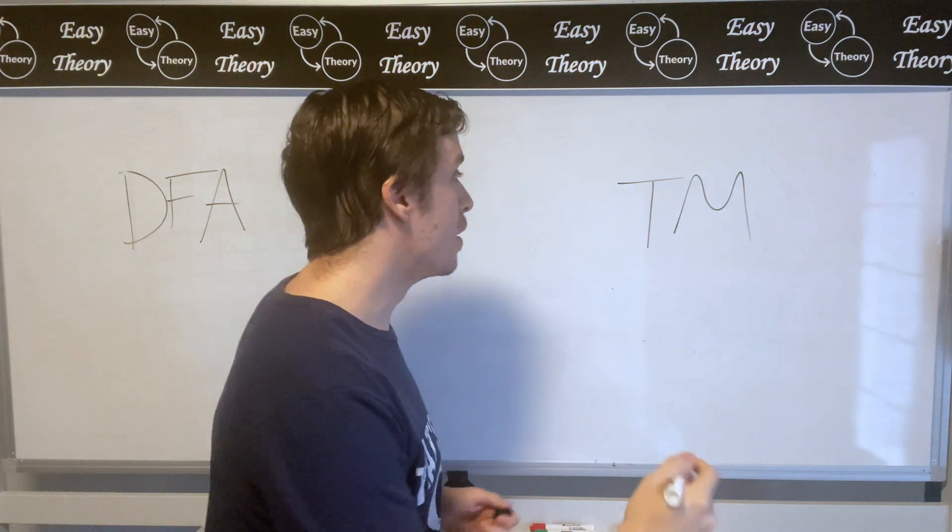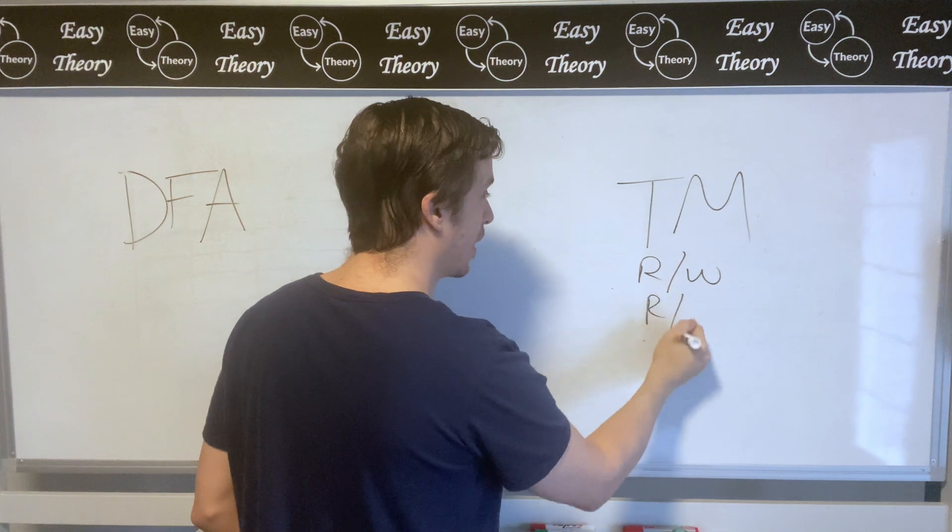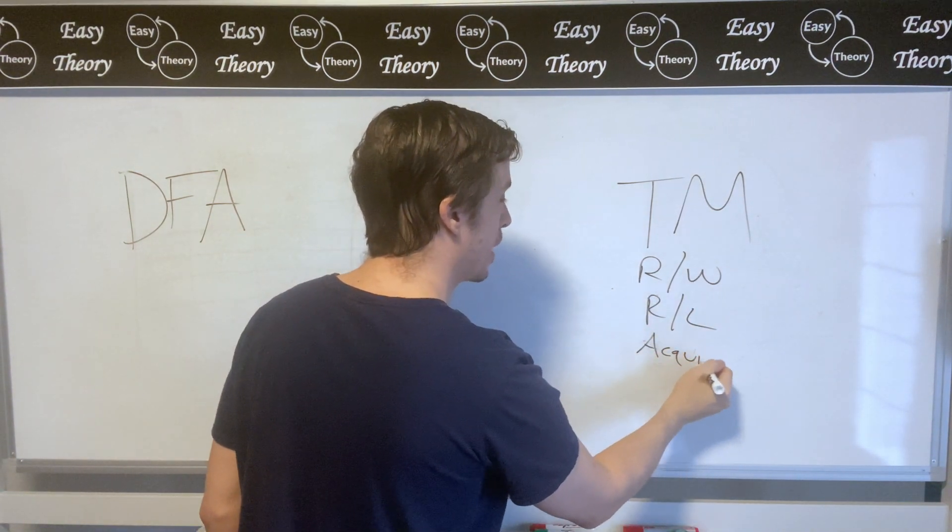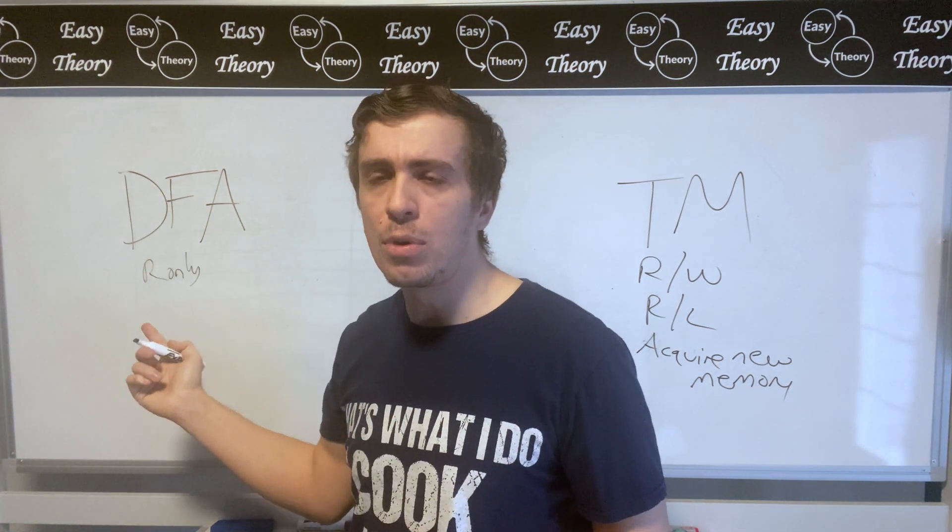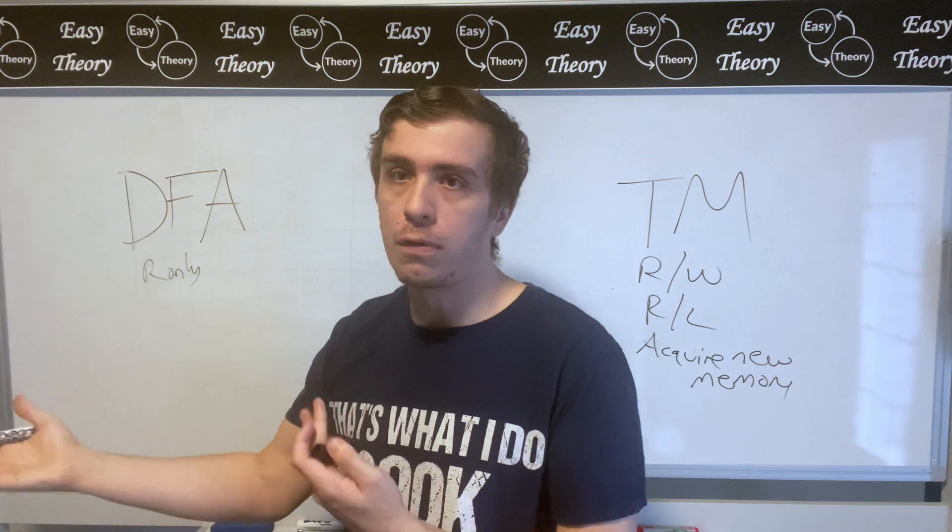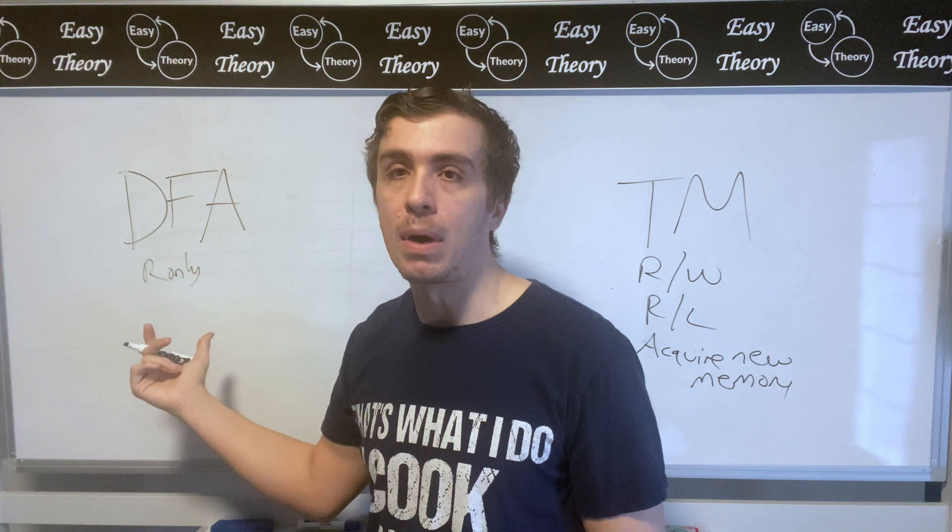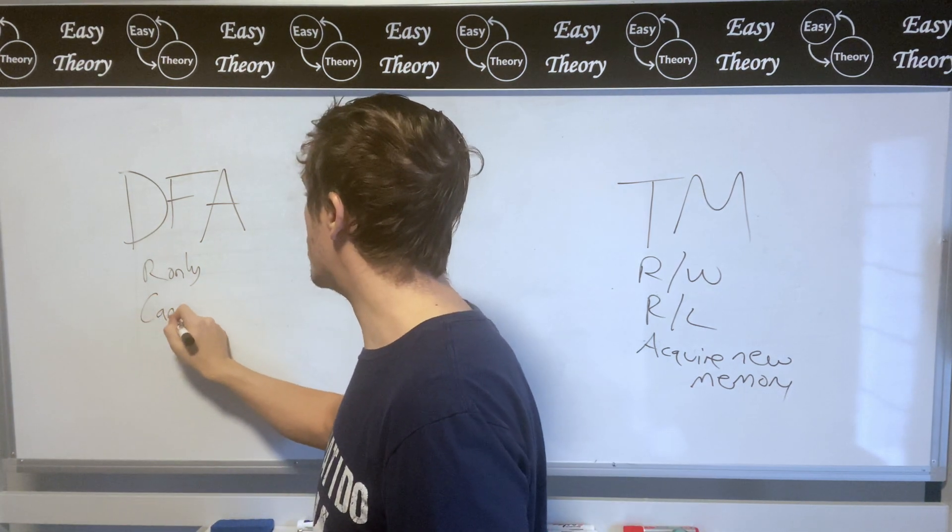The main reasons are that turing machines can both read and write as well as move right and left, and additionally can acquire new memory. Whereas DFAs on the other hand can only move right, and because they only move right it doesn't actually make sense to overwrite previous values because you can't look at previous data. There's no reason to give this model an ability to write over previous data and you cannot acquire new memory.